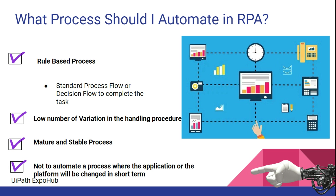It's not that you cannot automate a high-variation process, but the maintenance cost will be very high. You'd need employees to redo the work repeatedly, and if the cost of maintenance is high, it defeats the purpose of automation — you might as well let employees do it manually. So if there is a lot of variation, let them do it manually. Low exception rates and low variation are key.